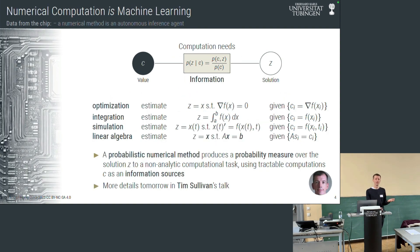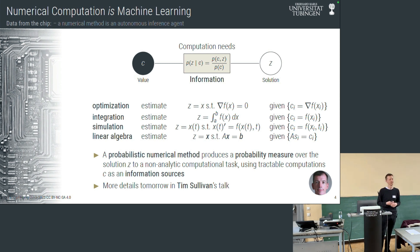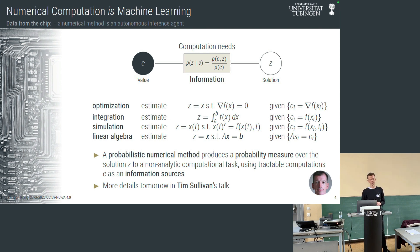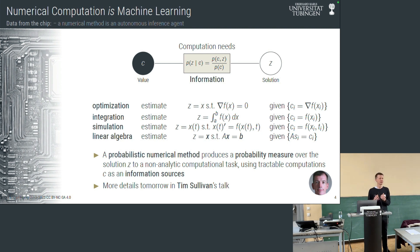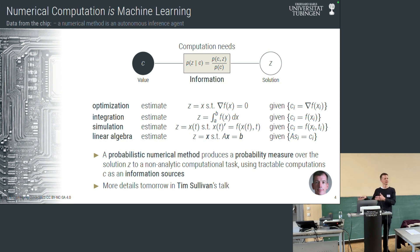What good news, then, that if machine learning needs new algorithms, the numerical methods we already use are actually learning machines as well. A numerical algorithm is a computer program that estimates an unknown quantity — like the location of a minimum of a function, the value of an integral, the solution of a differential equation, or the solution of a linear system — given a bunch of observed stuff like values of gradients, values of the integrand, values of the vector field, or matrix-vector products.